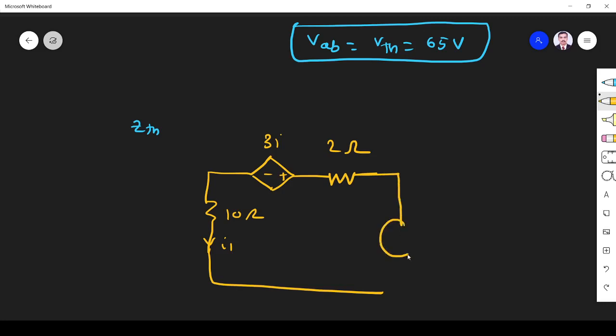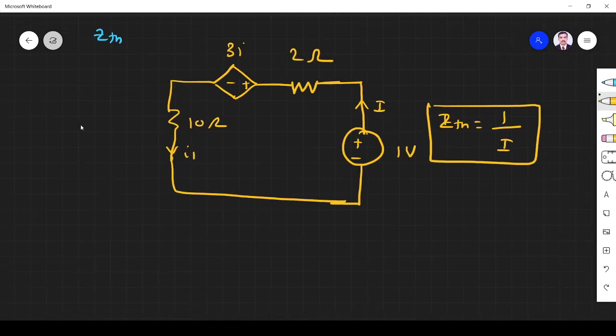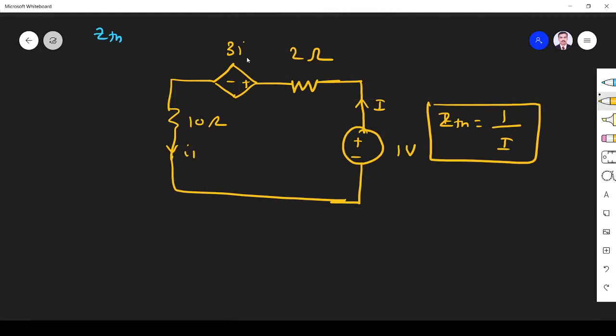We have to include one voltage source of any value, but I am using 1 volt and find i. So now Zthevenin will be 1 volt by i. That is what Zthevenin is whenever we have a dependent source. This is 3i1.